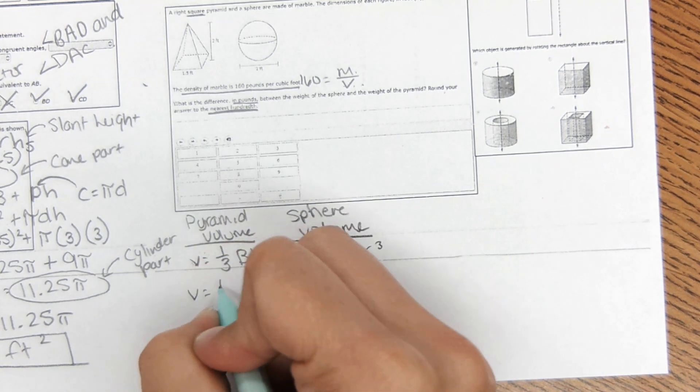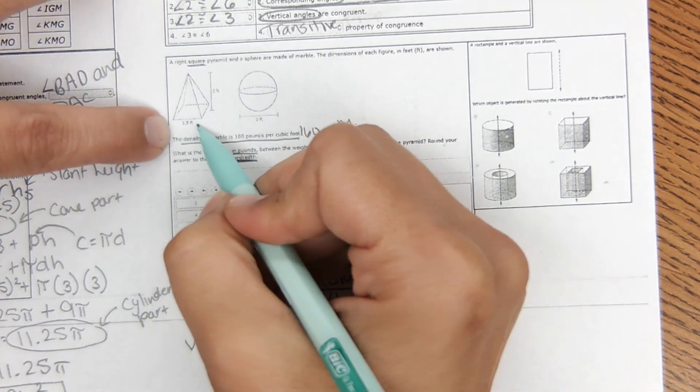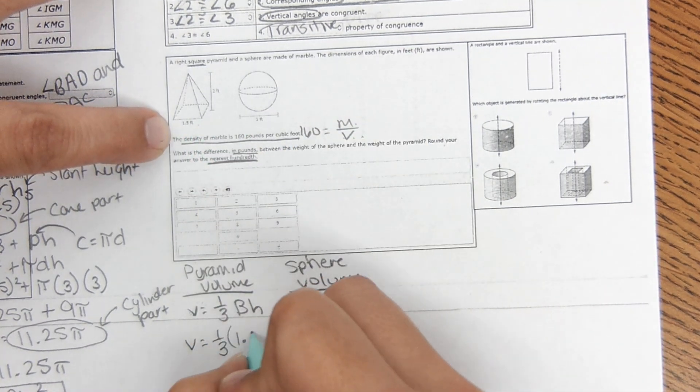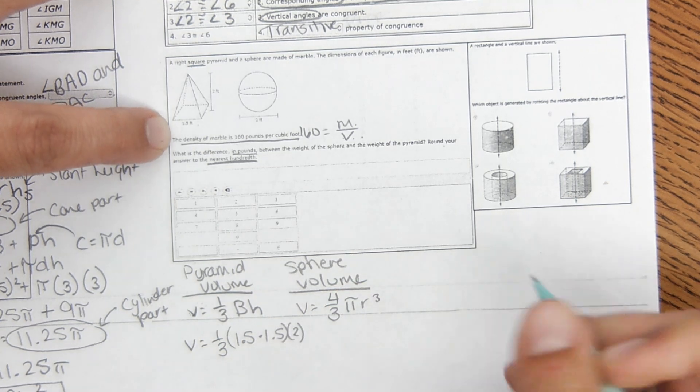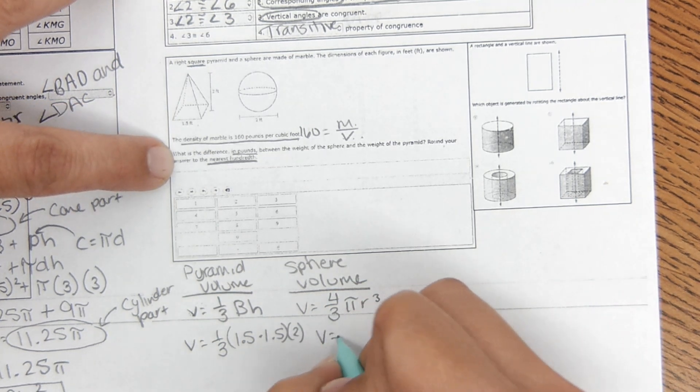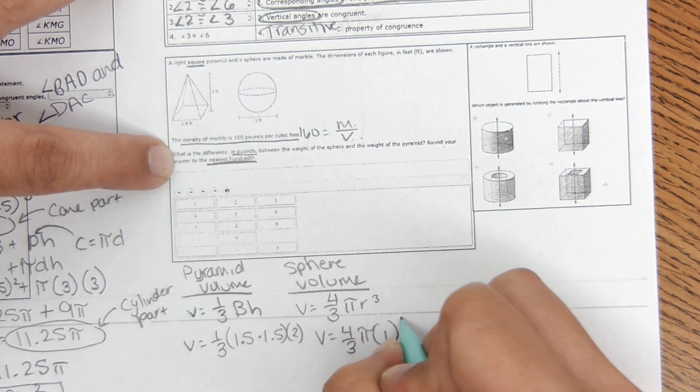Okay, so pyramid area of the base. It told me it's a square pyramid. So the base dimension is 1.5 times 1.5, and the height is 2. And then sphere volume, four-thirds pi, the radius is 1 cubed.